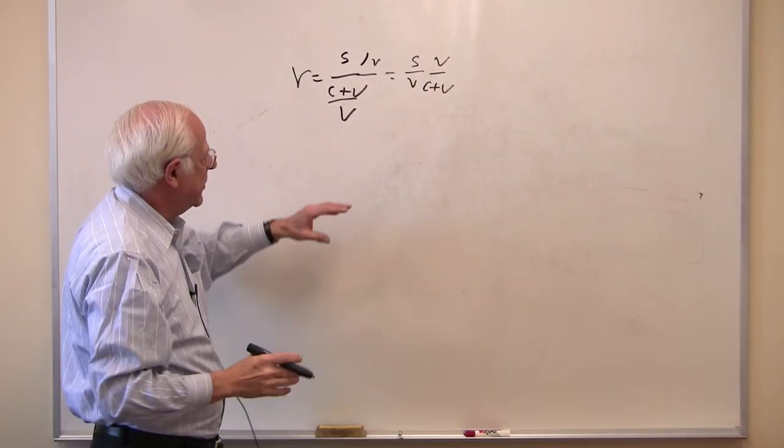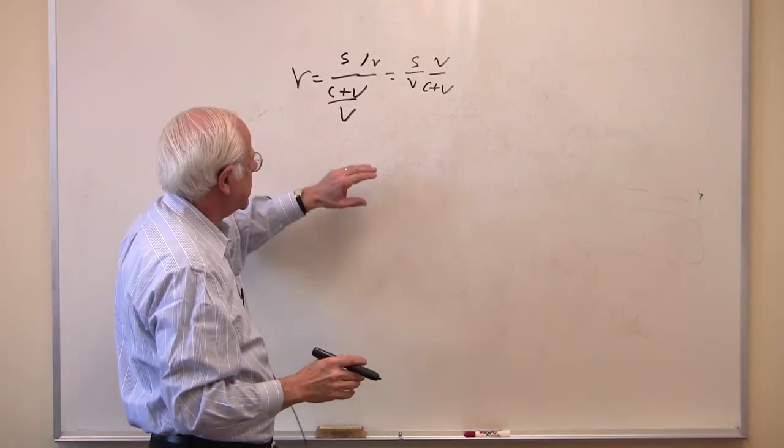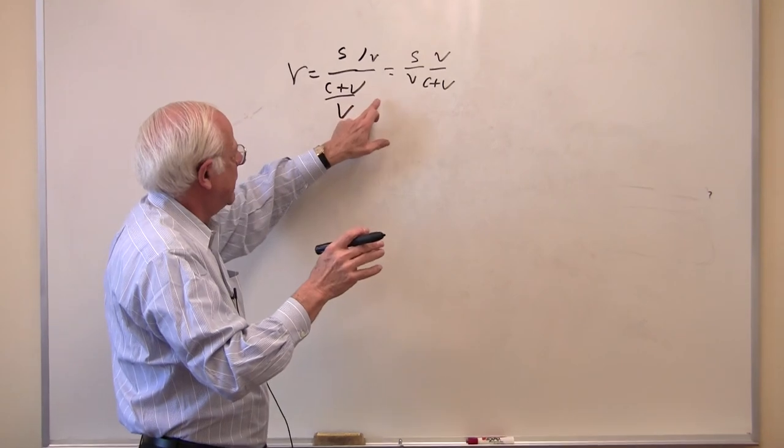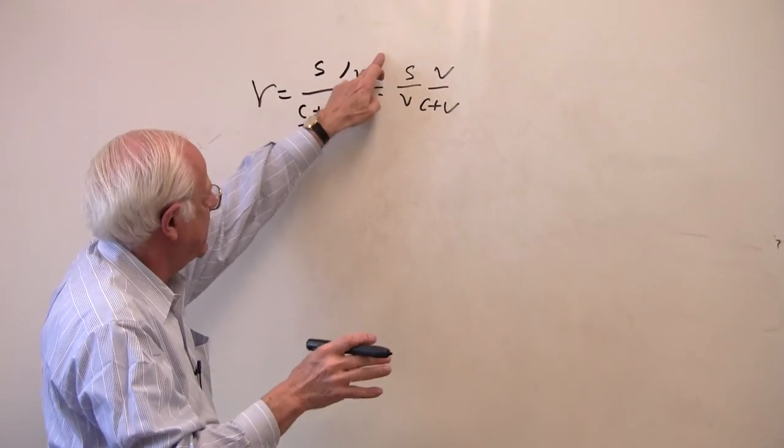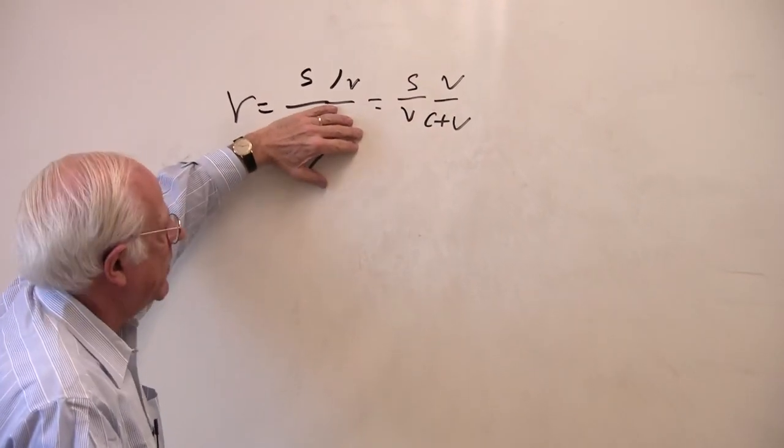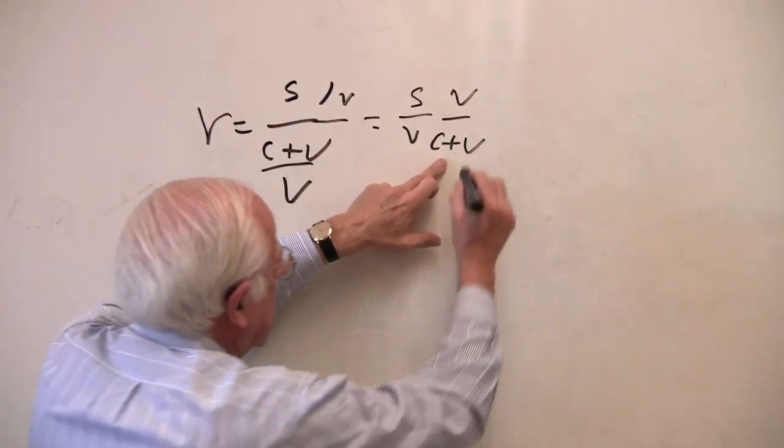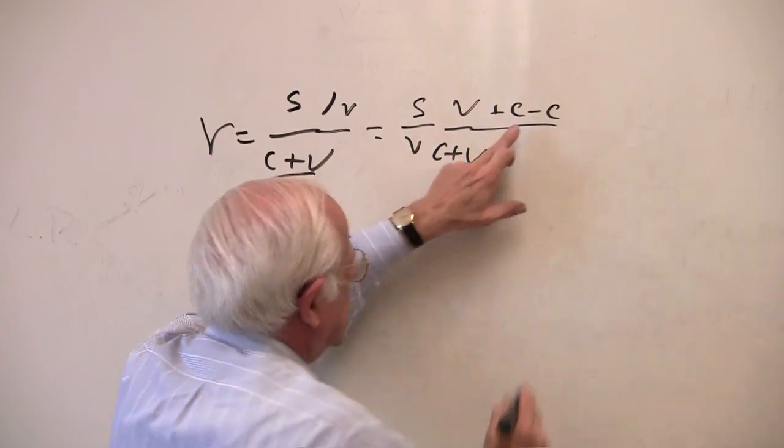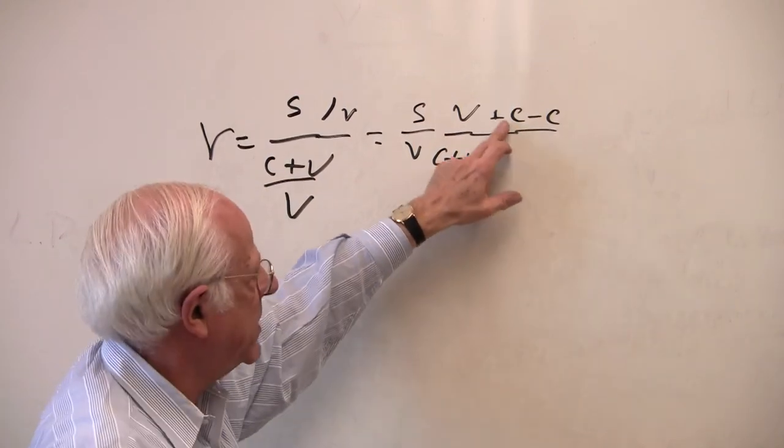You know, a little bit of algebra, you can do this after the lecture. You can multiply the numerator by V divided by C plus V. That'll cancel out. That'll be one, and that'll give me this. Add C and subtract C. So as you know from high school, C minus C is zero.